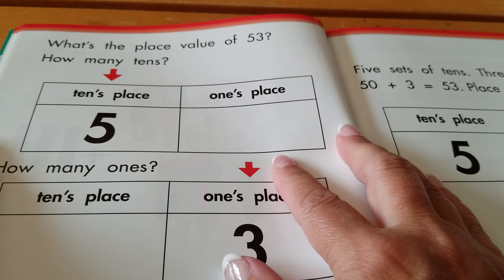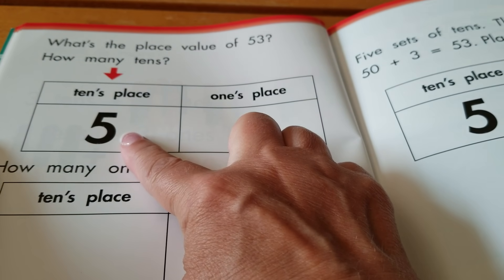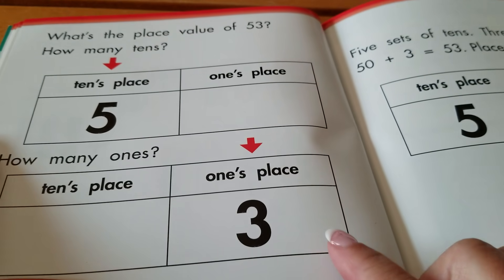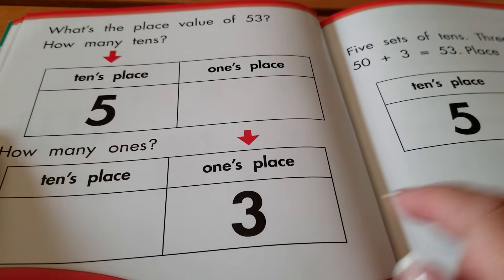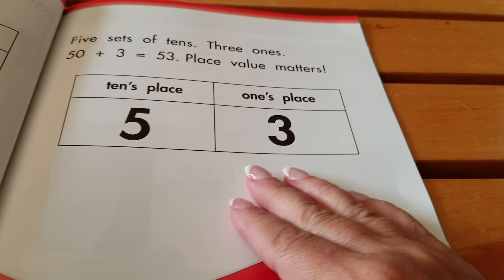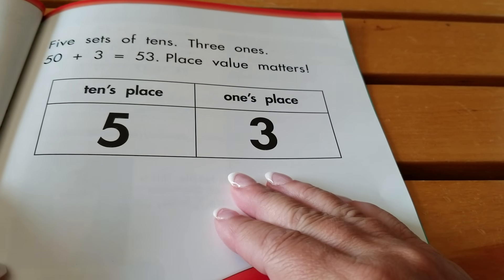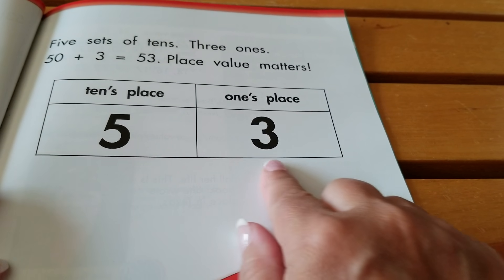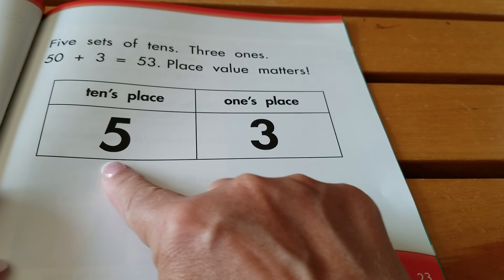What's the place value for fifty-three? How many tens did we have? Five. How many ones did we have? Three. Five sets of tens and three ones. Fifty plus three equals fifty-three.